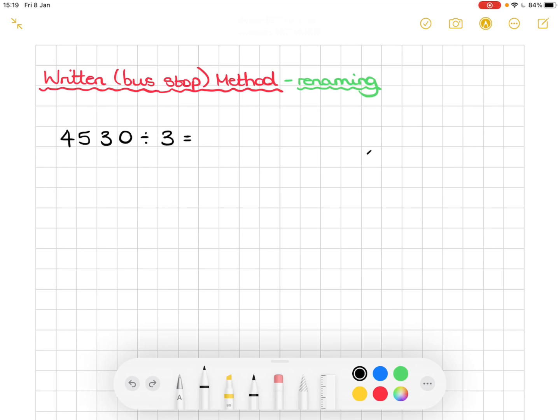So my number is 4530. And if I pop that in the bus stop, remember bus stop you do a tick like your teacher does on your work, and then drag it across the top of your numbers. And on the outside here, you're going to put the number that you are dividing by, and we are dividing by 3.